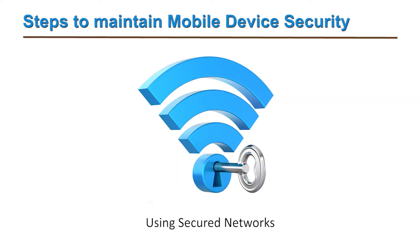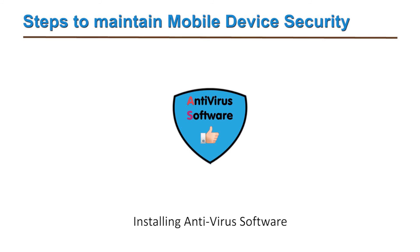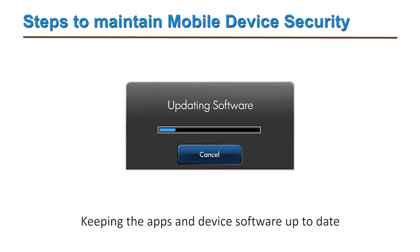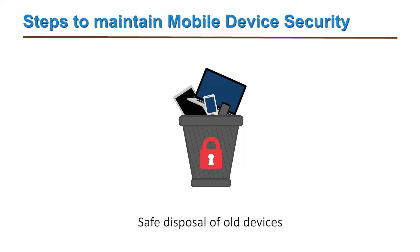The fourth step is installing antivirus software. The fifth is downloading apps only from trusted sources. The sixth is keeping apps and device software up to date. The seventh is safe disposal of old or unused mobile devices.